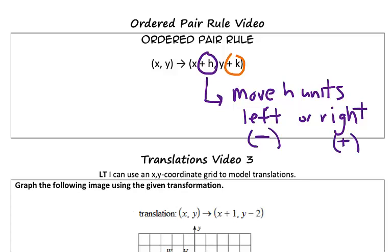On the other hand, for this Y plus K, in general, the Y value tells us to either move up or down on the coordinate grid. So, when we see Y plus K, it is telling us to translate or move the original points K units up or down.